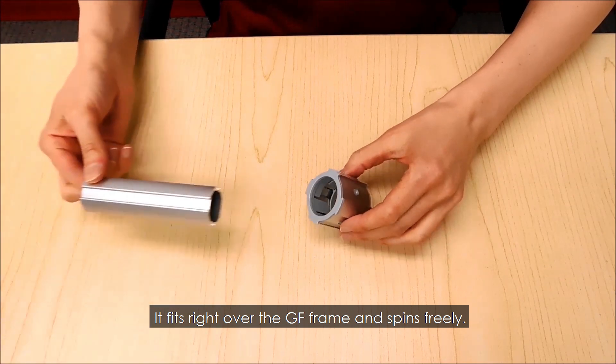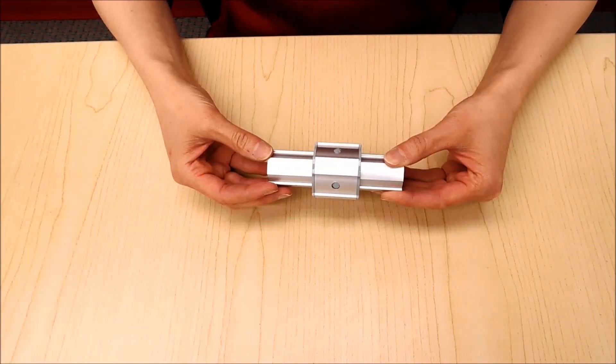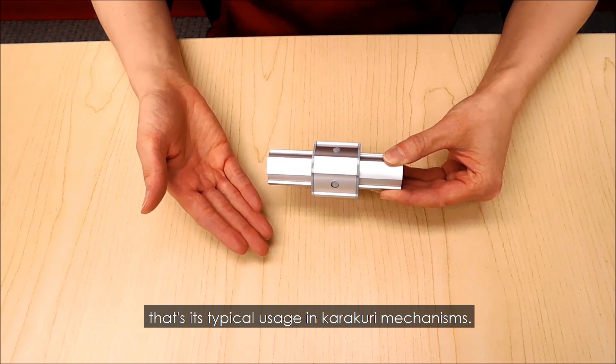It fits right over the GF frame and spins freely. It's called a hinge connector because that's its typical usage in karakuri mechanisms.